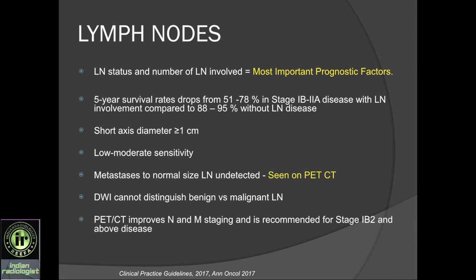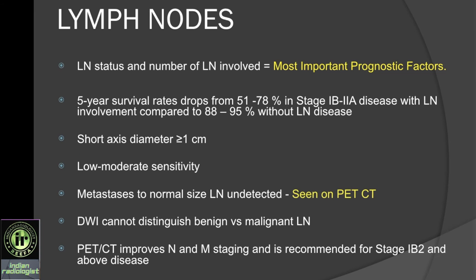Regarding lymph nodes, there is not much different in lymph node staging of cervical cancer from endometrial cancer. The size threshold you can take is 1 cm, or 0.8 to 1 cm as discussed previously. MRI has limited sensitivity in detecting metastatic disease in normal-size lymph nodes, but this can be resolved with PET-CT scan, which is recommended for most patients with higher stage cervical tumor. Therefore, PET-CT is recommended for anyone with stage 1b2 or above disease.